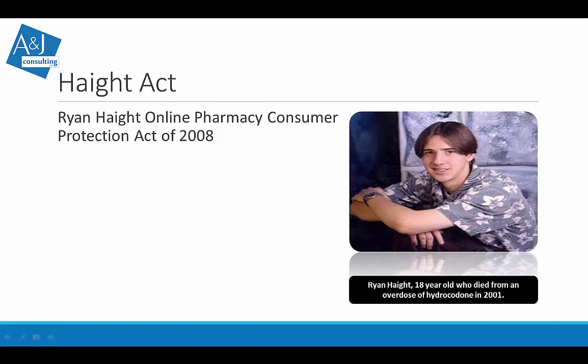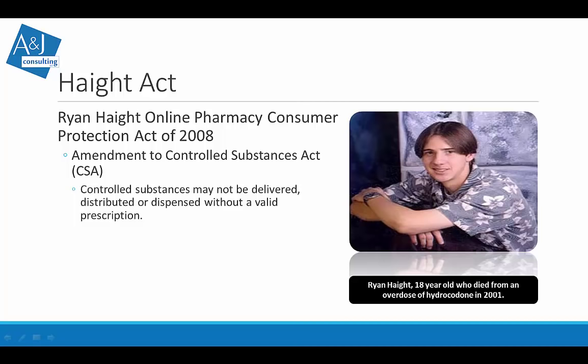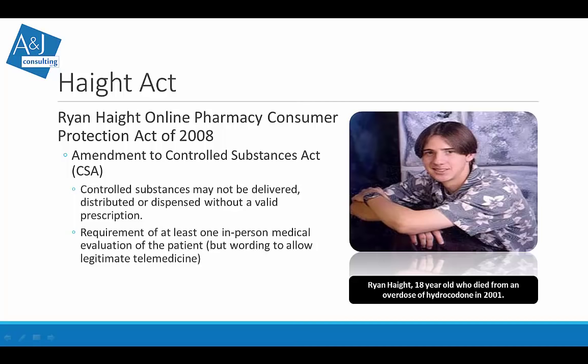The Haight Act was named after Ryan Haight, an 18-year-old who died from a hydrocodone overdose in 2001 after obtaining the drugs online. In response, the Controlled Substances Act was amended so that controlled substances may not be delivered, distributed, or dispensed without a valid prescription, requiring at least one in-person medical evaluation of the patient. The law did include wording to allow some legitimate telemedicine. The Haight Act was essentially enacted to crack down on online pill mills and illegal online pharmacy operations.